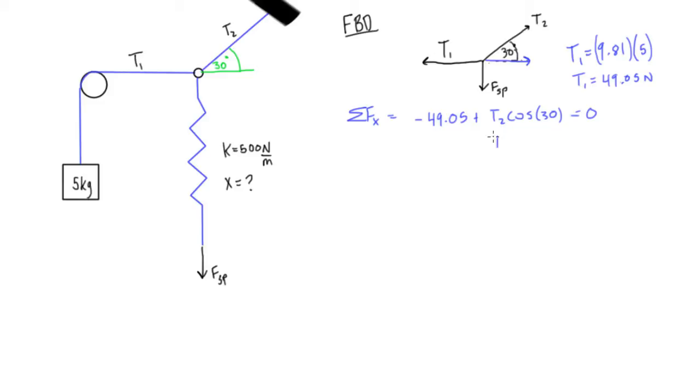Okay, so we'll isolate for T2 is equal to 49.05 over cos 30, and we get T2 is going to be equal to 56.638 newtons just by doing that calculation. Perfect, so now we know this whole force going at 30 degrees and then we can use that to calculate its y component which will be in our force balance for the y direction.